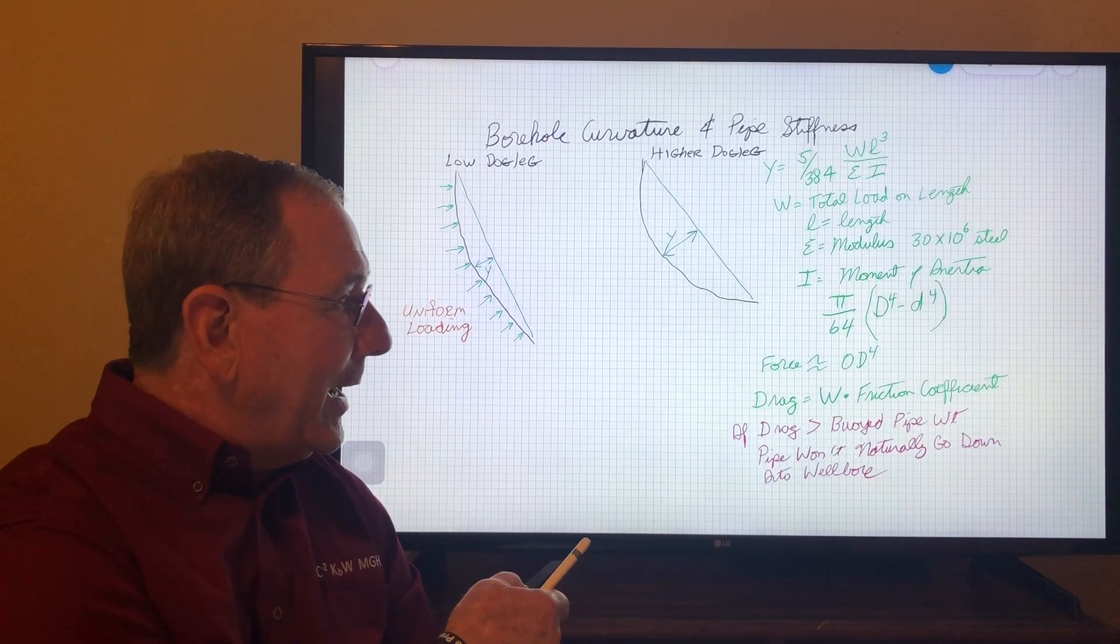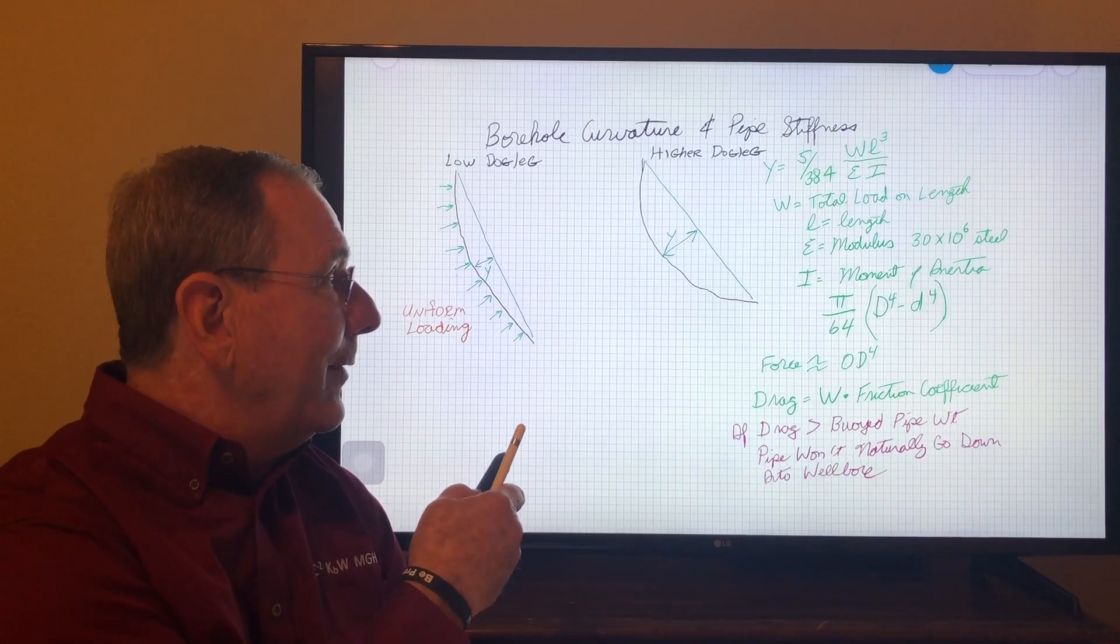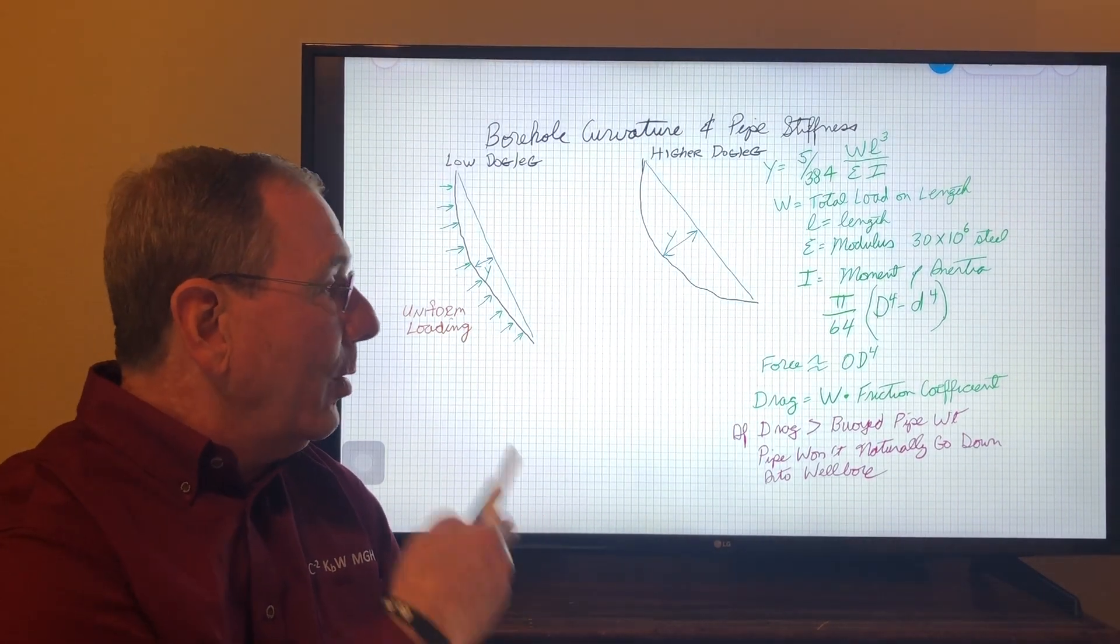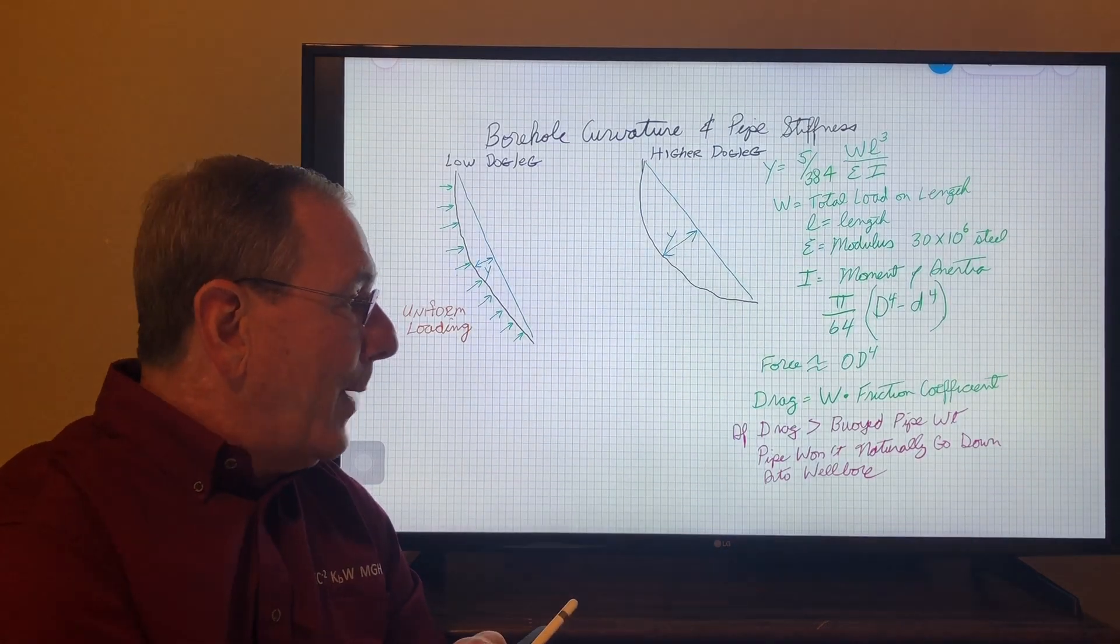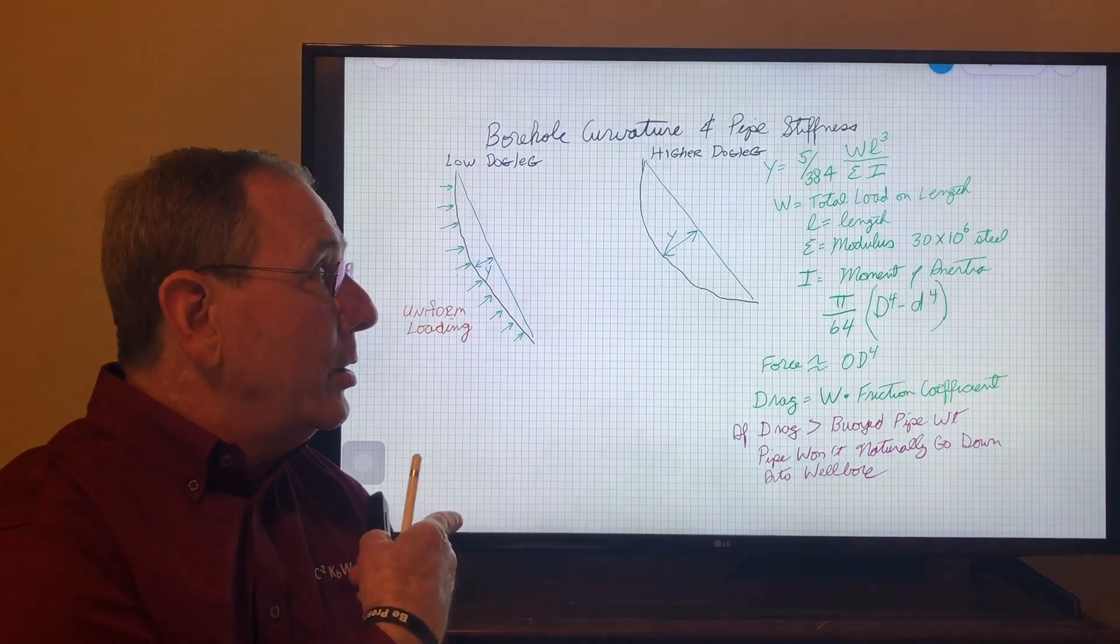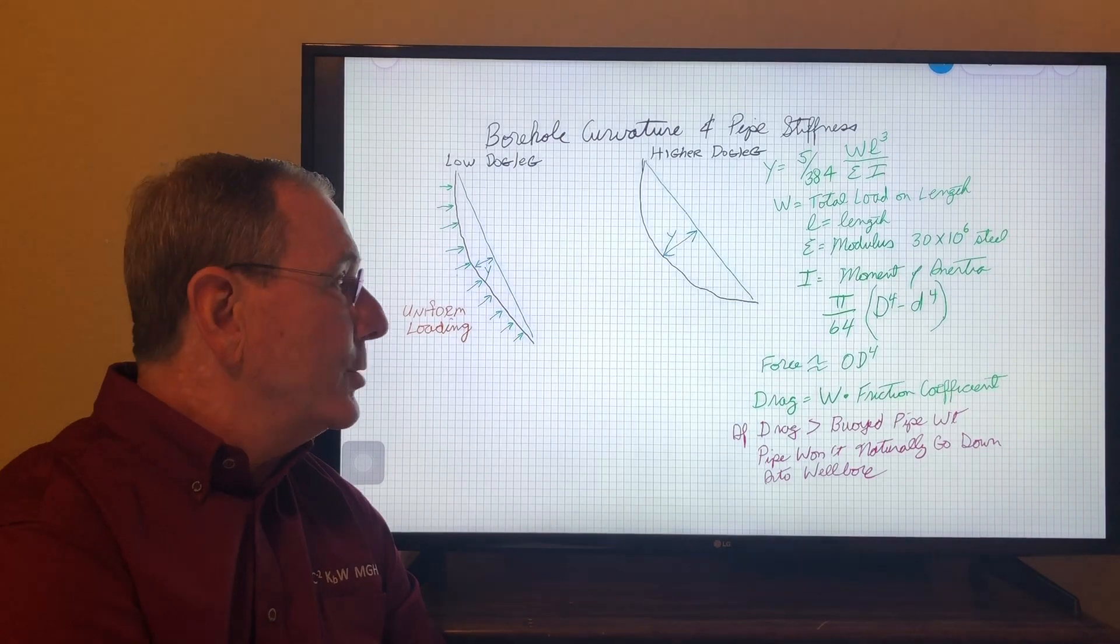It just so happens to be if our drag due to our conditions of having large casing and a high dog leg is greater than the buoyed pipe weight, then our pipe won't naturally go down into that well. You never can take this for granted—this is some of the work that you do when you do the torque and drag modeling on a directional well.